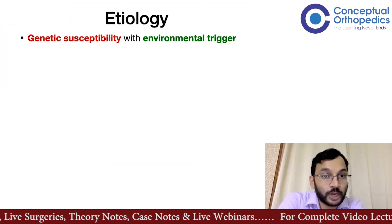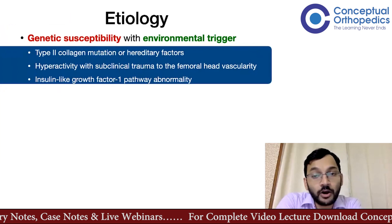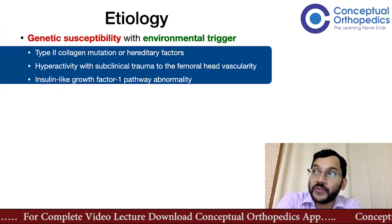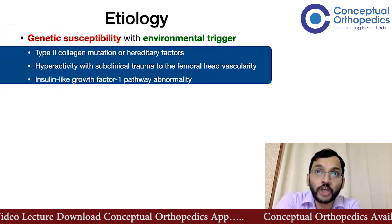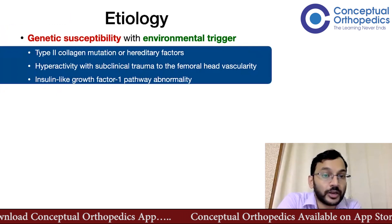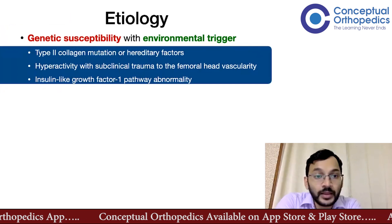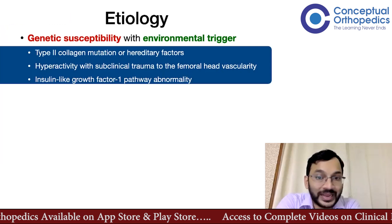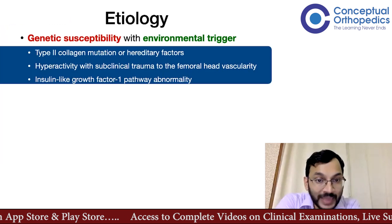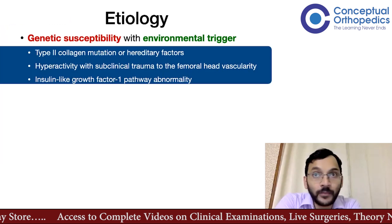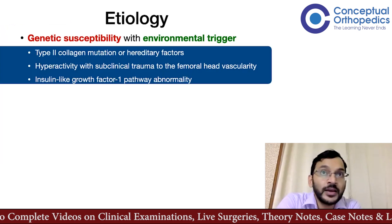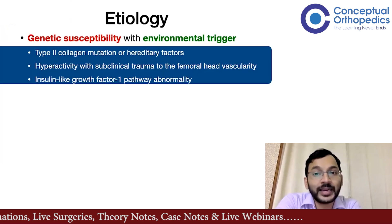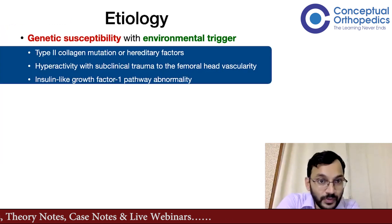Breaking down the etiology: genetically, there could be a mutation in type 2 collagen or other hereditary factors leading to a type 2 collagen mutation. This was found commonly in the Asian population but not consistently in other populations. Additionally, an abnormality in the IGF-1 (insulin-like growth factor 1) pathway — important for growth of both bone and brain — was implicated. An abnormality in IGF-1 would cause both bone and brain dysfunction, leading to hyperactivity or ADHD in these children, which would cause subclinical trauma due to hyperactivity, ultimately leading to femoral head dysvascularity.